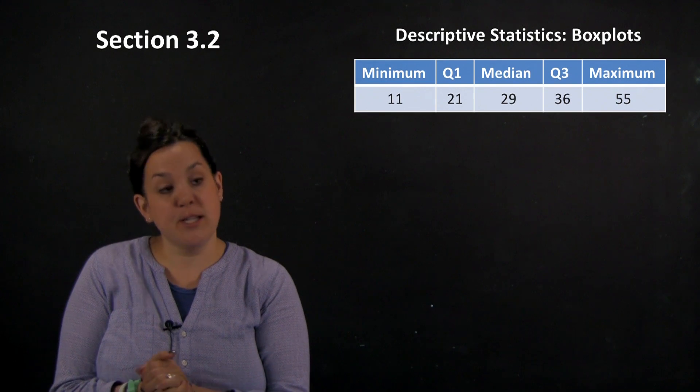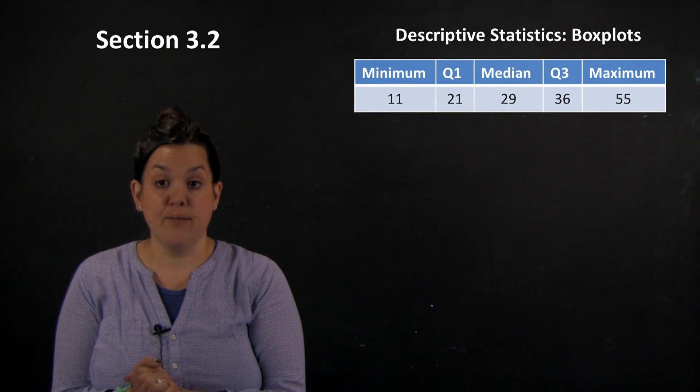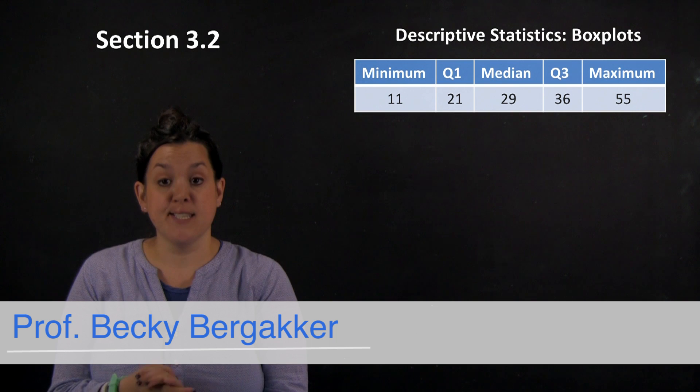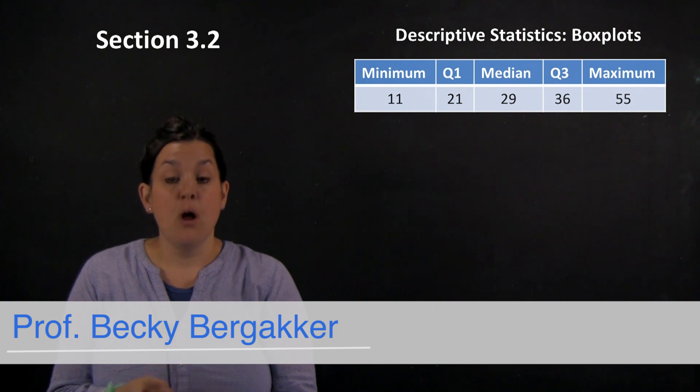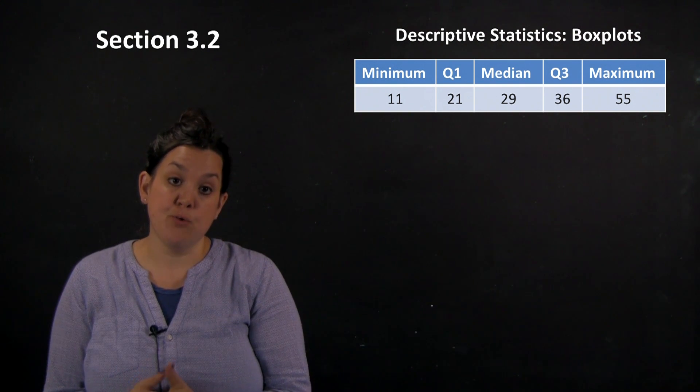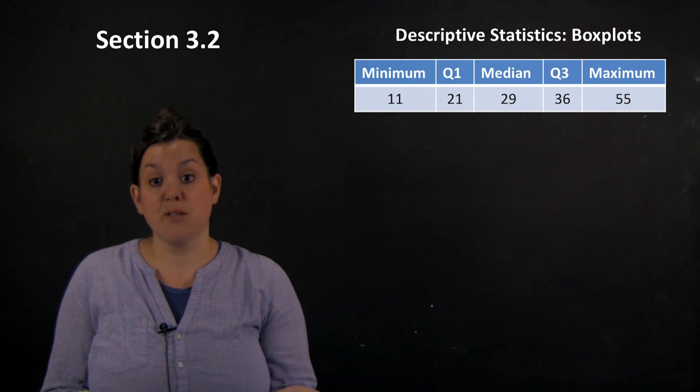Good morning class. Today we're continuing our discussion of chapter 3 looking at the analysis of one quantitative variable. Right now we're in section 3.2 which is looking at a descriptive statistic called a box plot.